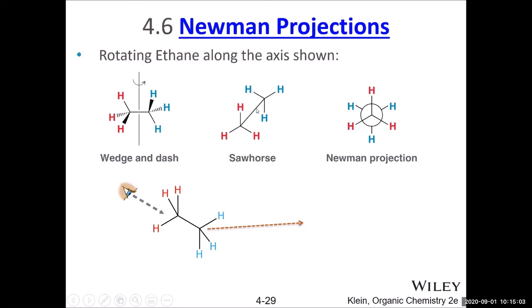For a convenient way to draw this kind of structure, if you look from one end and put your eyes at the front, the red hydrogens are close to you. You represent the C–C bond using a white circle. That becomes what we call the Newman projection structure.